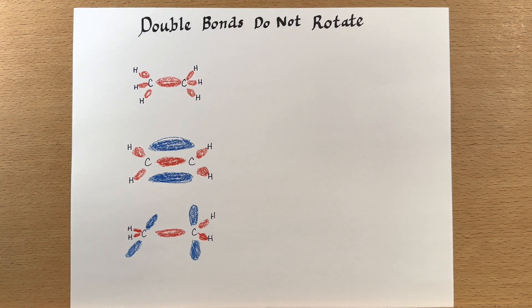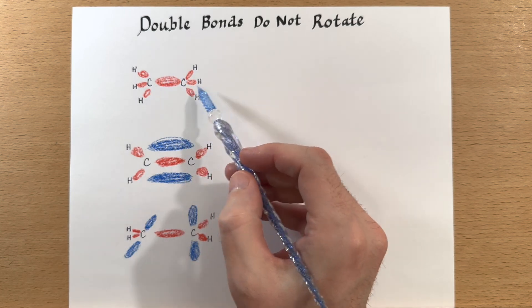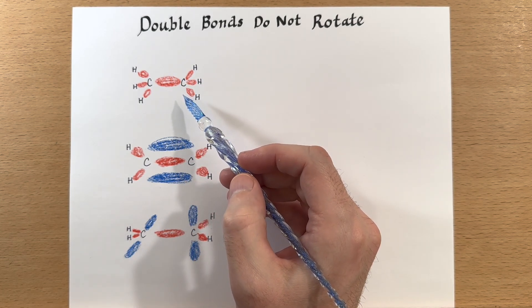Let's look at some double bond geometry and notice that double bonds cannot rotate around the double bond. So first let's look at something that doesn't have a double bond, like ethane.